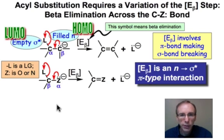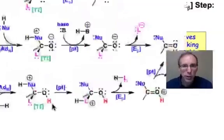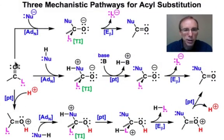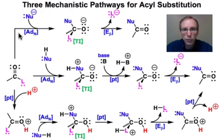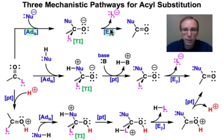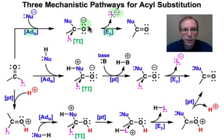Now let's take a look at those three mechanistic pathways and decide under which conditions they're operative. Under basic conditions, the simplest pathway is operative — that's the pathway that involves just a two-step sequence: an ADn step to generate the tetrahedral intermediate, followed by the beta elimination step. This takes place generally under basic conditions, and you can see that we always have negatively charged intermediates.